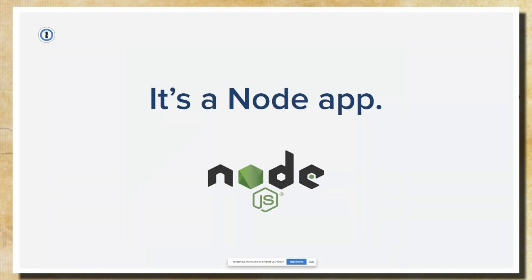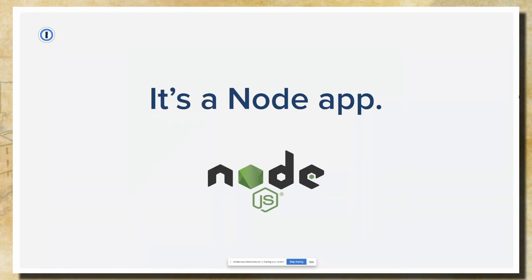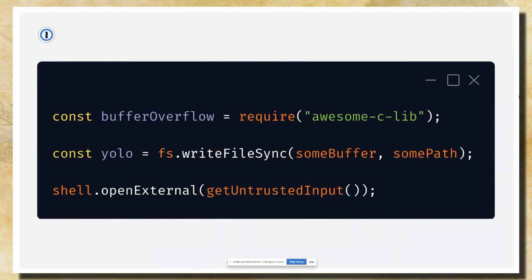But it's not just a web browser. An Electron app is also a Node.js app. It lets you basically take JavaScript out of your web browser and write it on your desktop. You can import a C library, write data to disk, or even open shell commands with whatever input you feel like. So it's a pretty powerful and — of course — secure way to write apps.